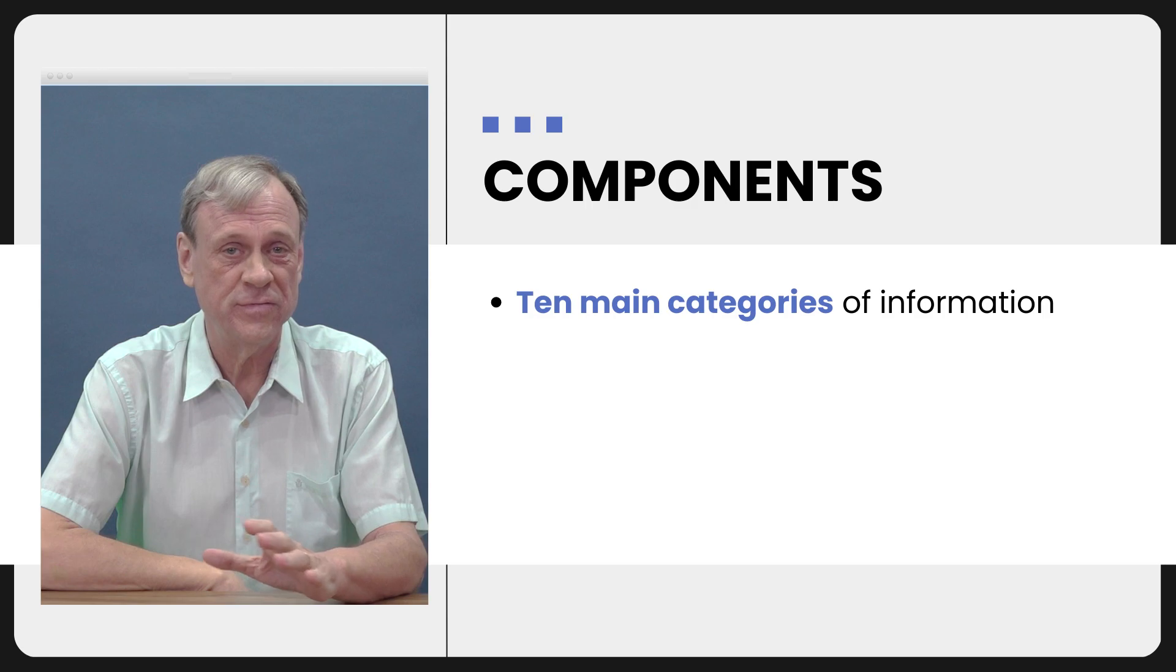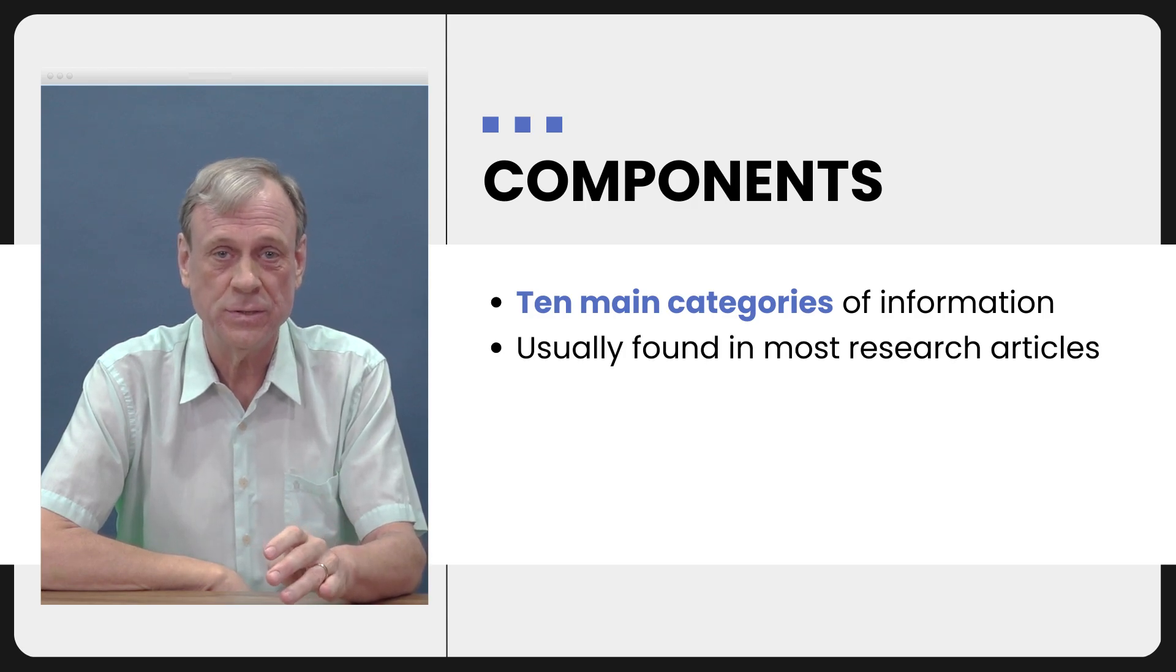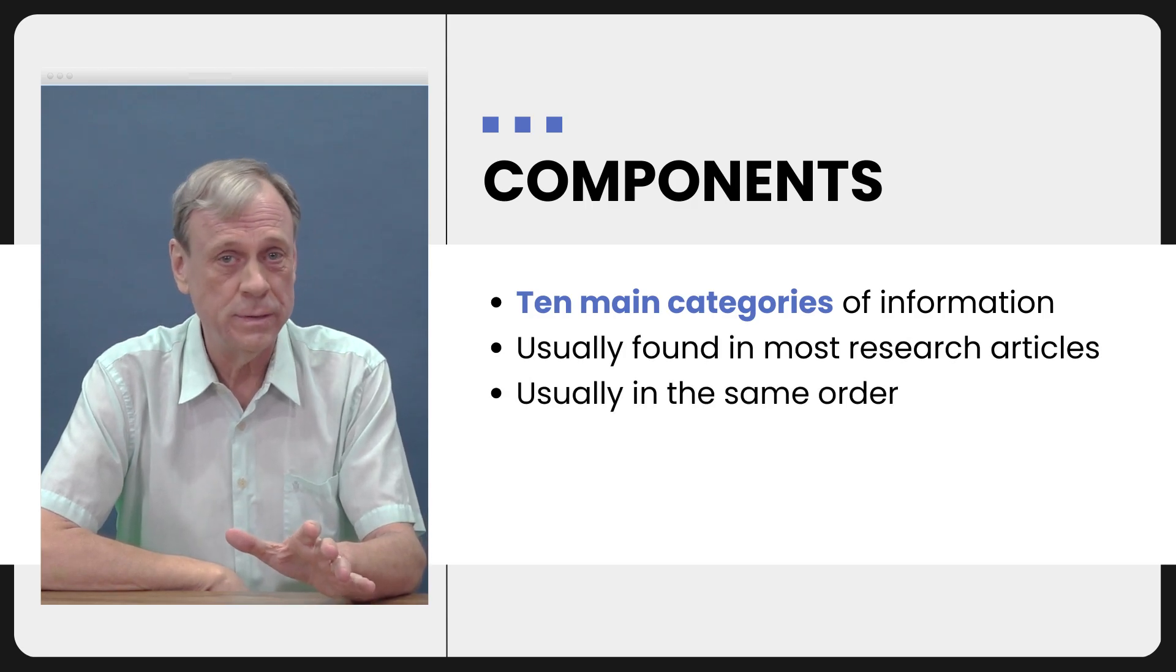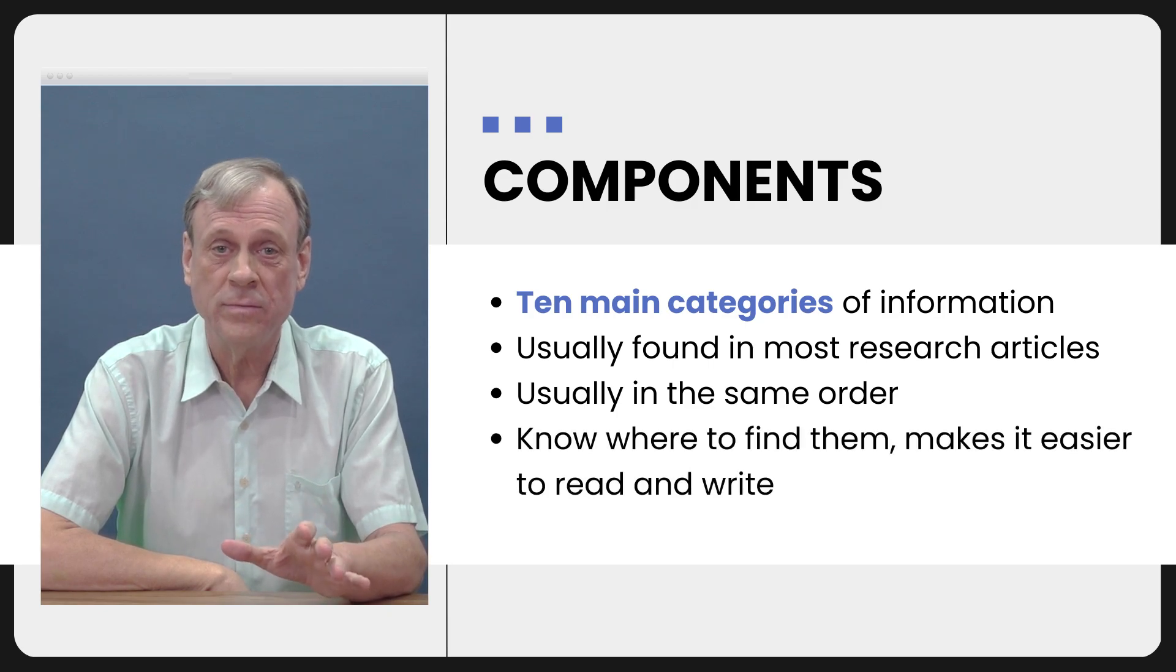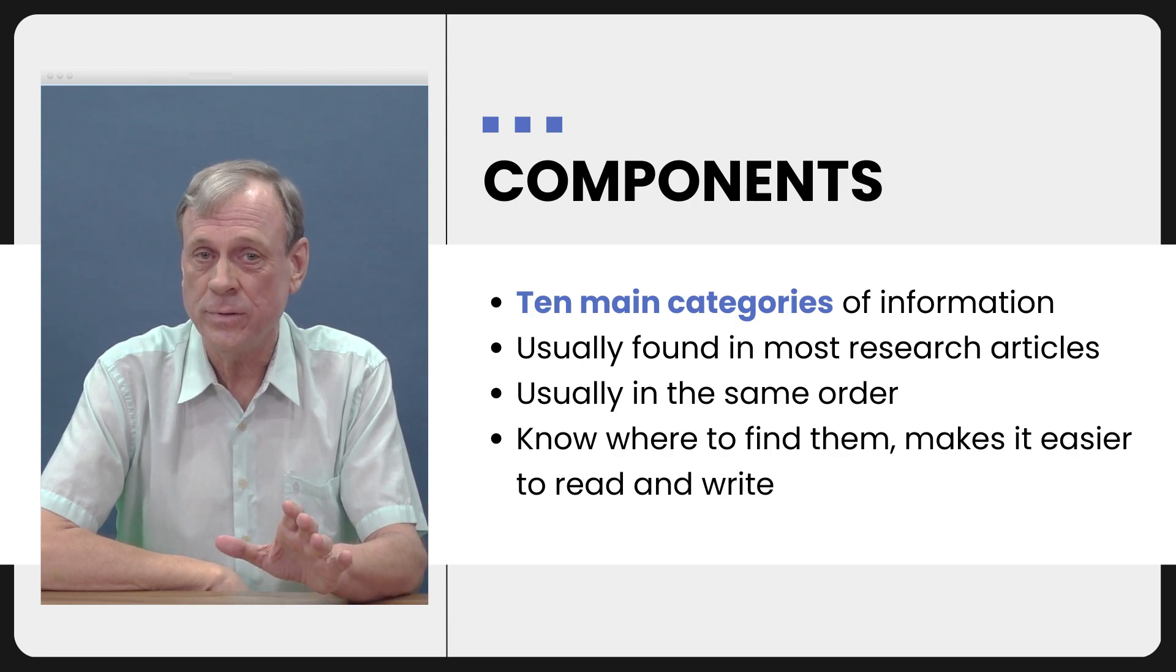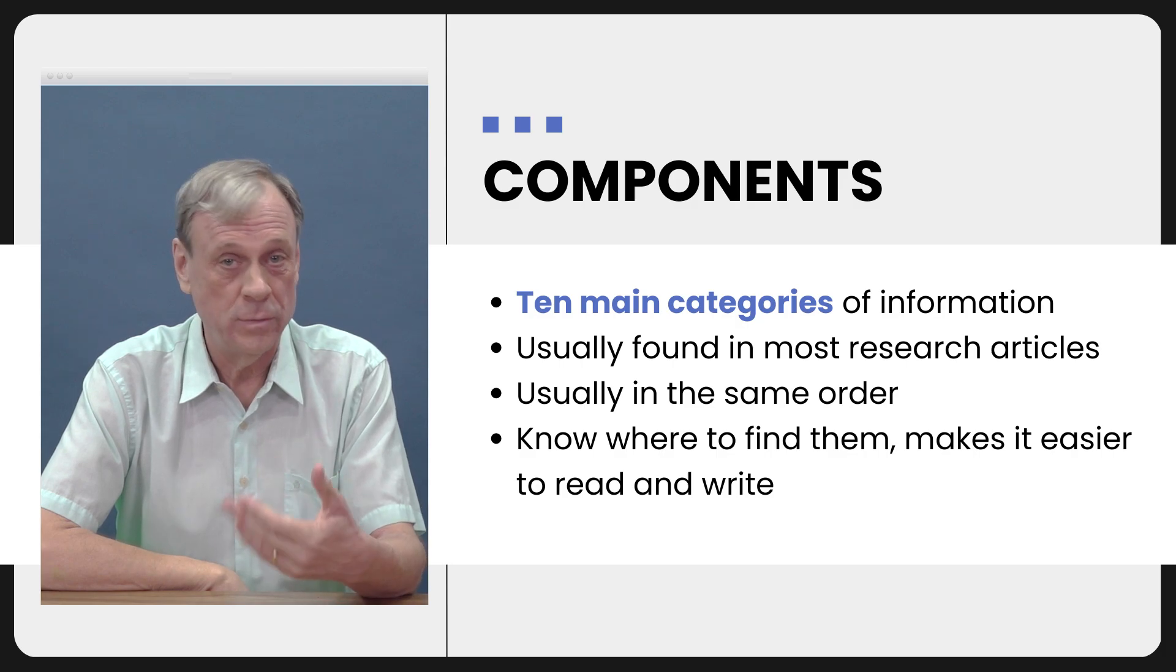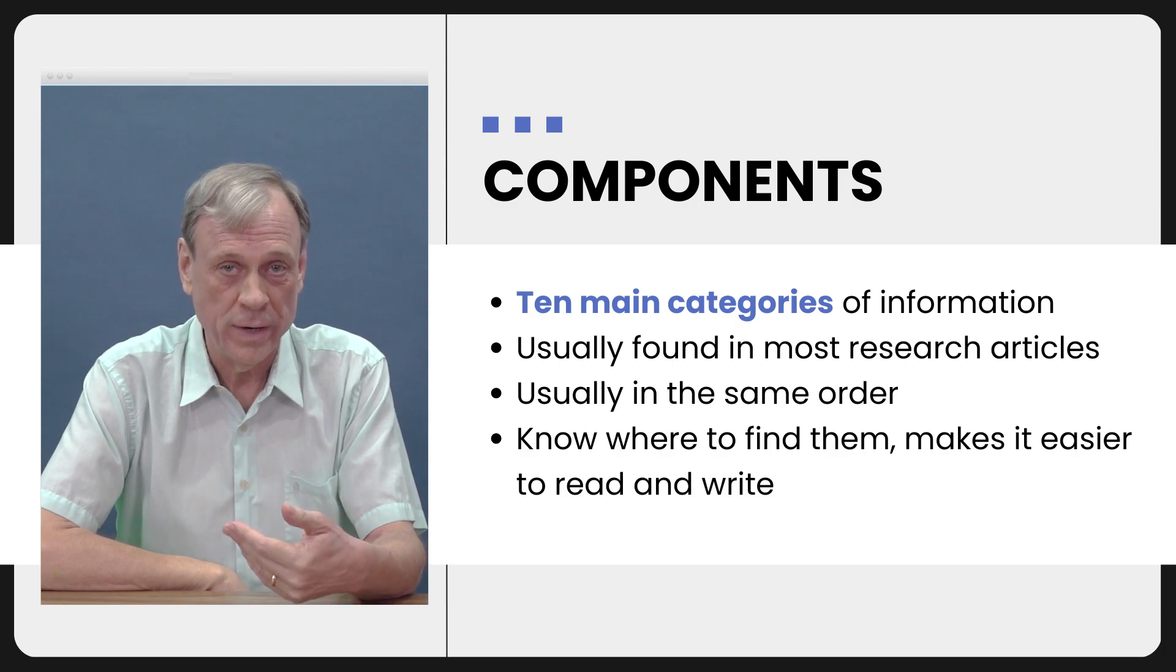So in the final video in this unit we're going to look at components, what I call components, which are ten categories of information that are found in most research articles and usually in a pretty predictable order. And again, if you know how to find them, if you know what's going to be there and what order, it's going to be easier for you to read articles and it will also be important in writing up your information because you know what the expected order is.